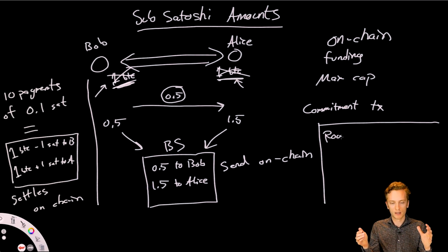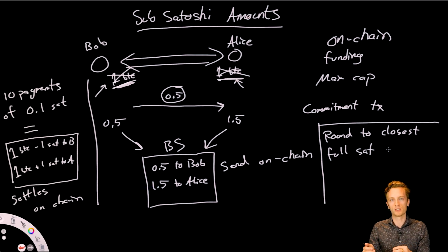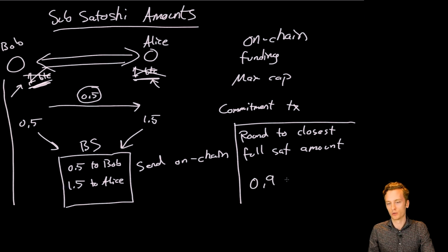A payment, a balance sheet, where Bob has only paid 0.9 Satoshi and Alice has received 0.9 Satoshi, that can't be settled on the blockchain. So, instead, it will round. So, 0.9 would then round to just 1 Satoshi, right? Because that can settle on the blockchain. So, that is how we can send sub-Satoshi amounts.